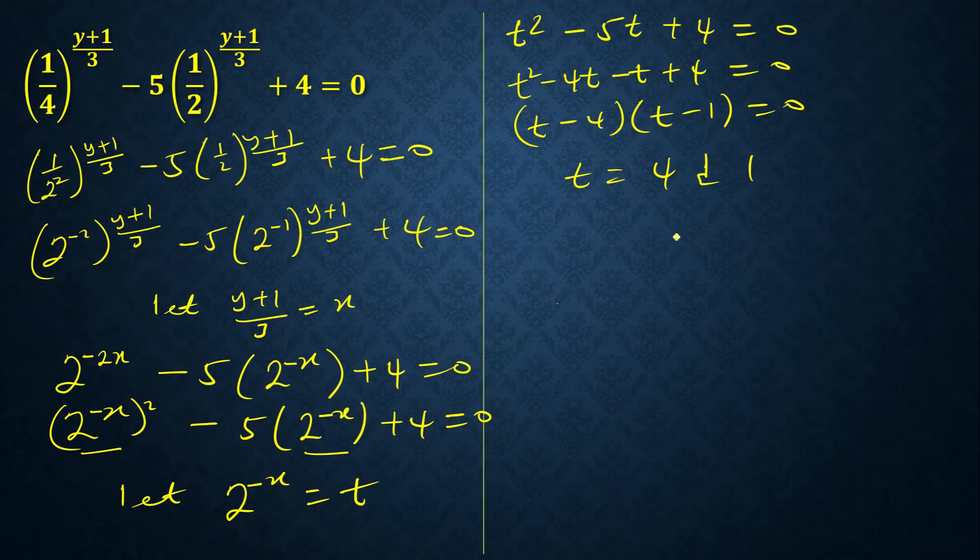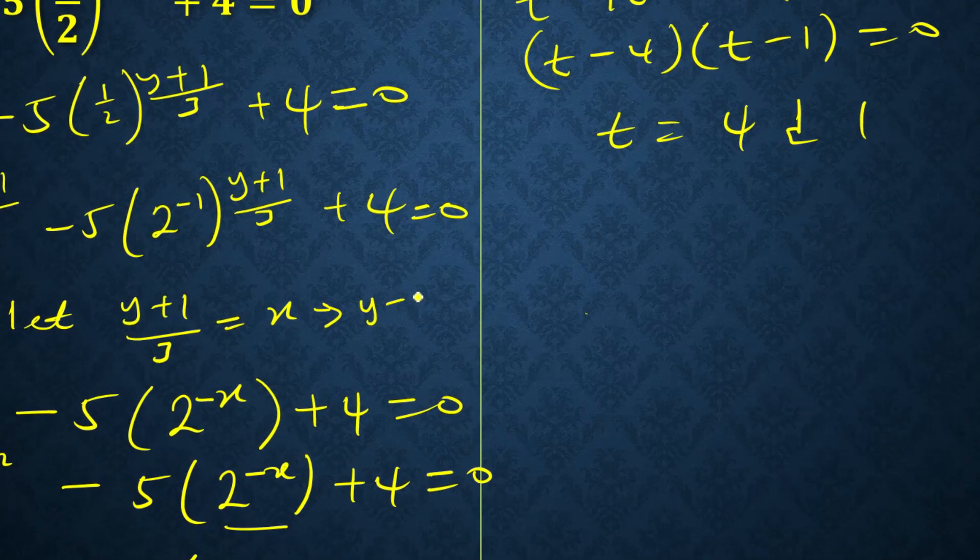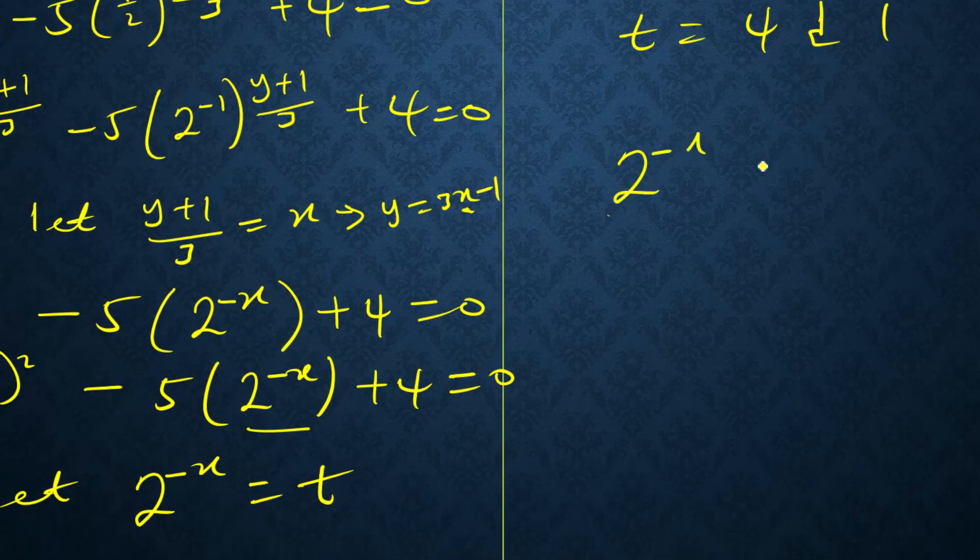Let's go back. We have 2 to the minus x because we need to solve for x before we get y. Remember y equals 3x minus 1, so we need to get x from here. So 2 to the minus x, the first answer for t is 4.